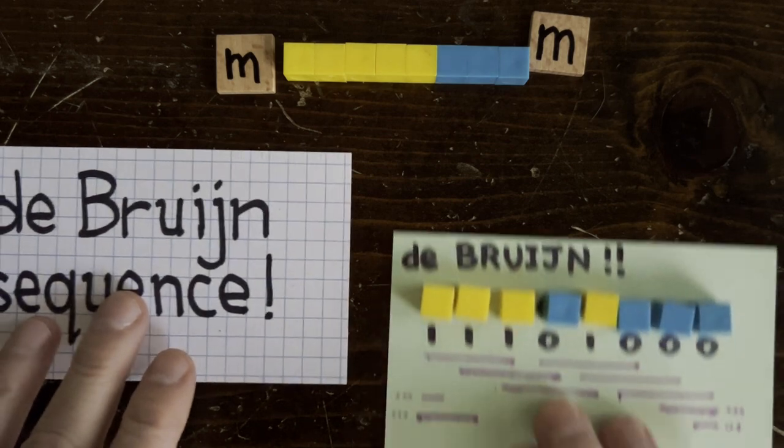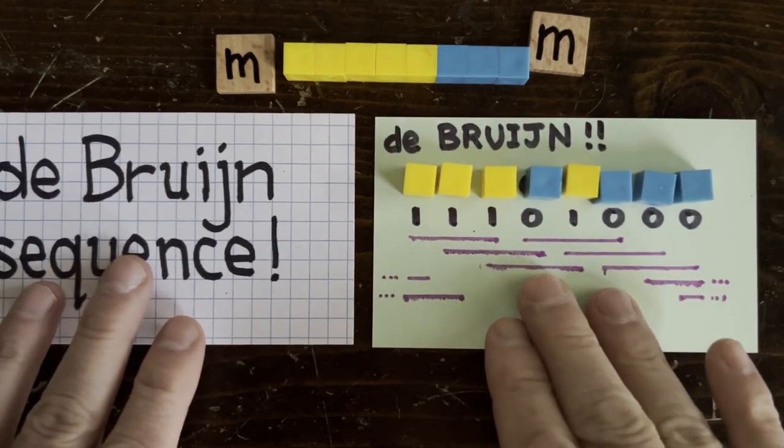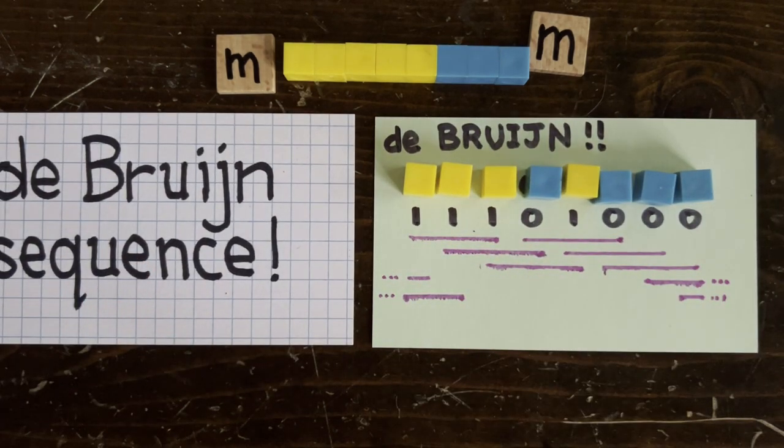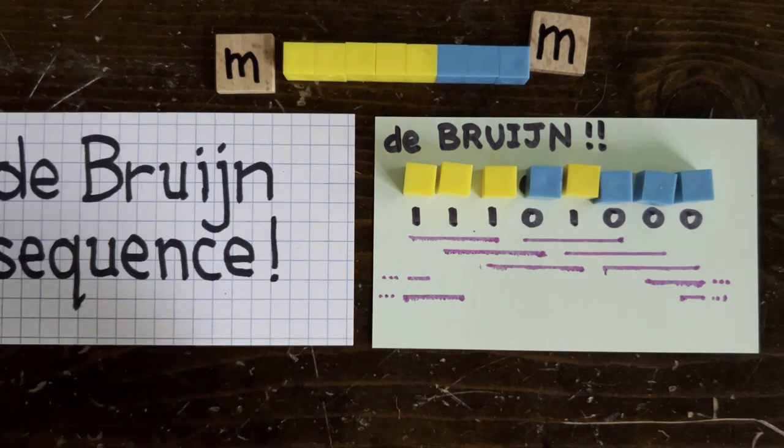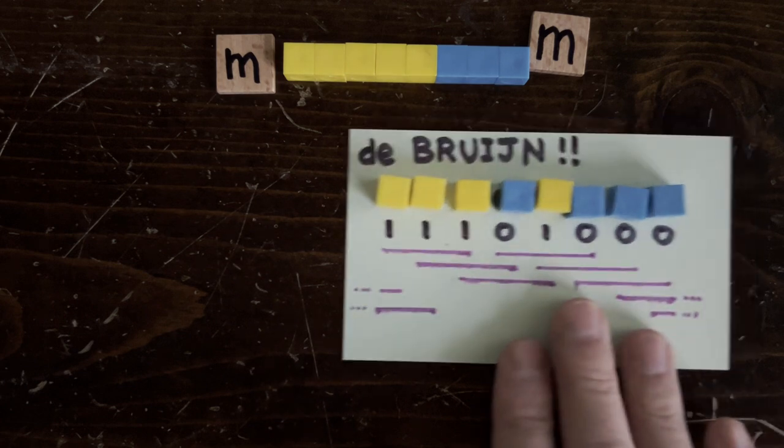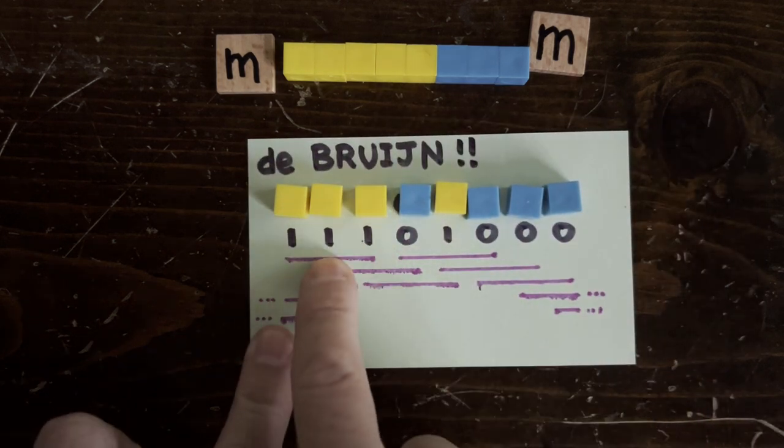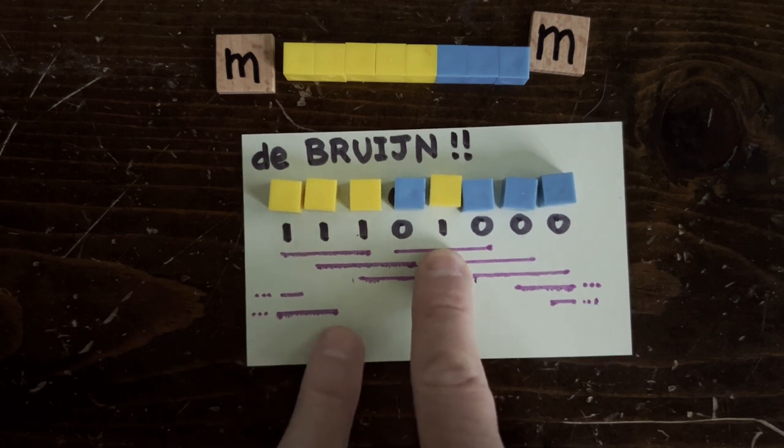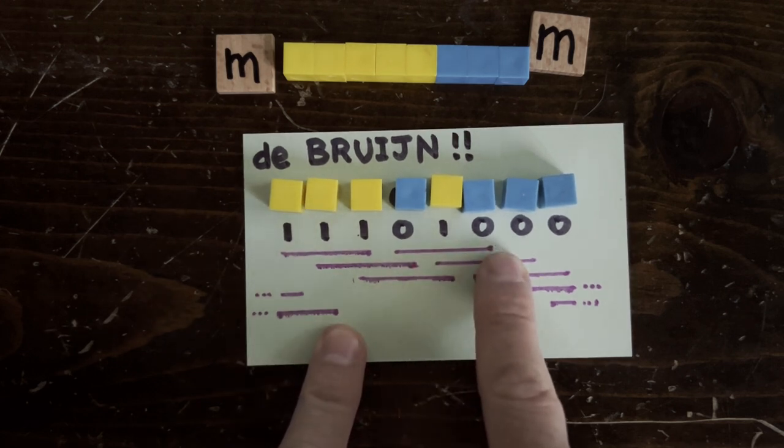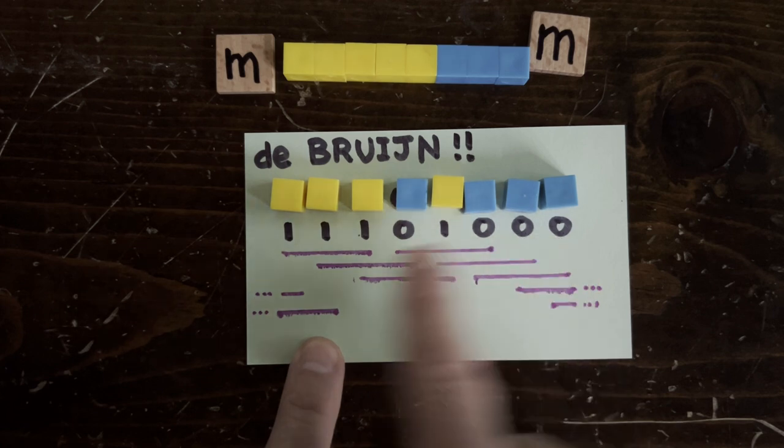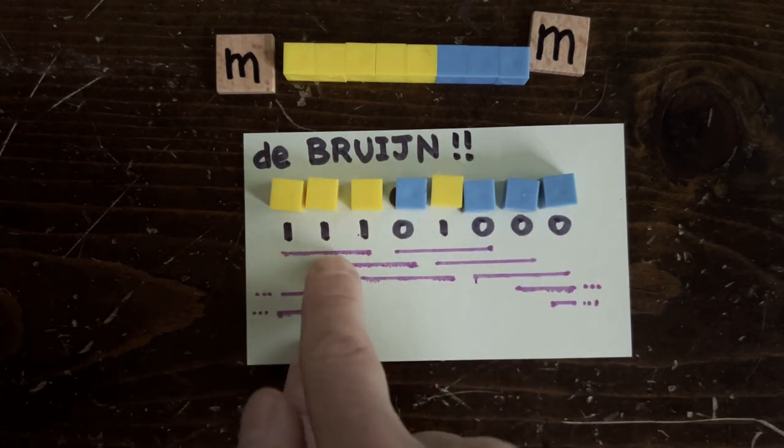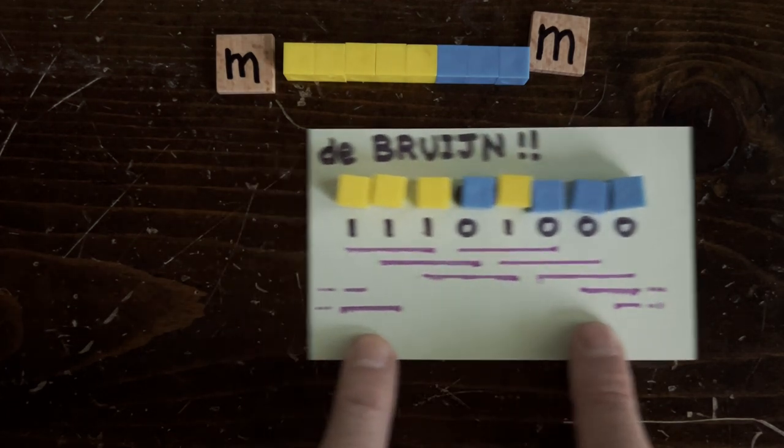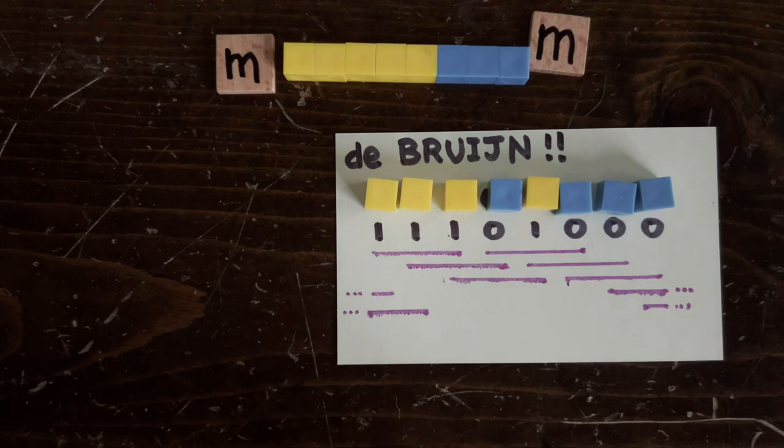And here's one of length 8. 1-1-1-0-1-0-0-0 is designed so that every possible subsequence of length 3 occurs exactly once. So here's 1-1-1, here's 1-1-0, 1-0-1, 0-1-0, and so forth. And then wrapping around 0-0-1, 0-1-1. So none of those occurred twice, and so the longest repeated sequence is of length 2.